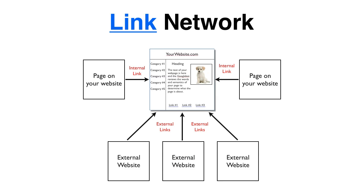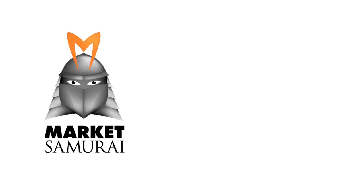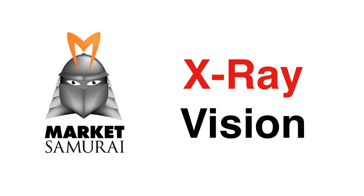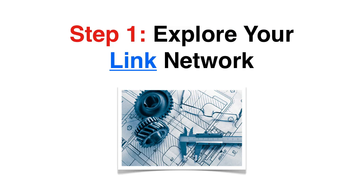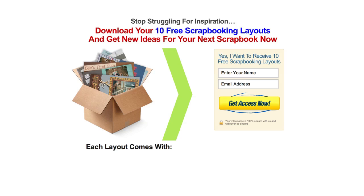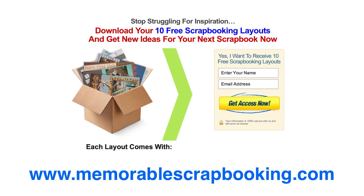Now that you understand that each page on the internet has a link network which contributes towards its ranking in the search engines, let's take a look at how you can use Market Samurai's improved X-ray vision feature to systematically improve your rankings. Our SEO blueprint has five simple but powerful steps. Step 1: Explore your link network. To show you how this works, I'm going to take a look at a real-world example of a website called memorablescrapbooking.com, which belongs to the mum of Ben who works here at Noble Samurai.